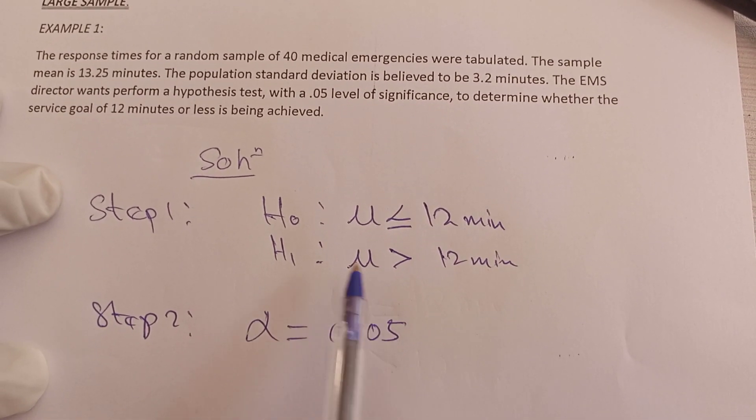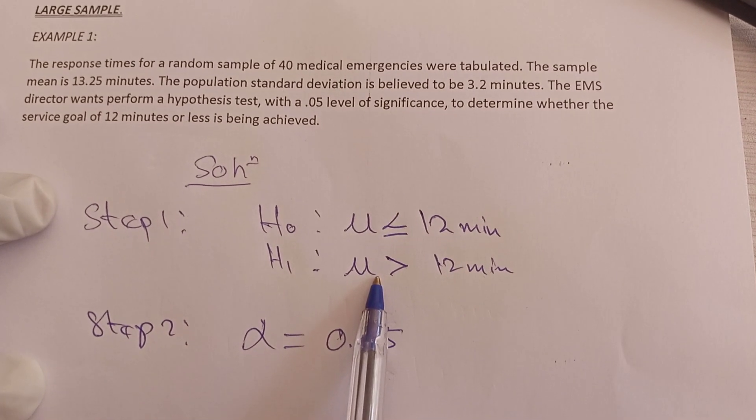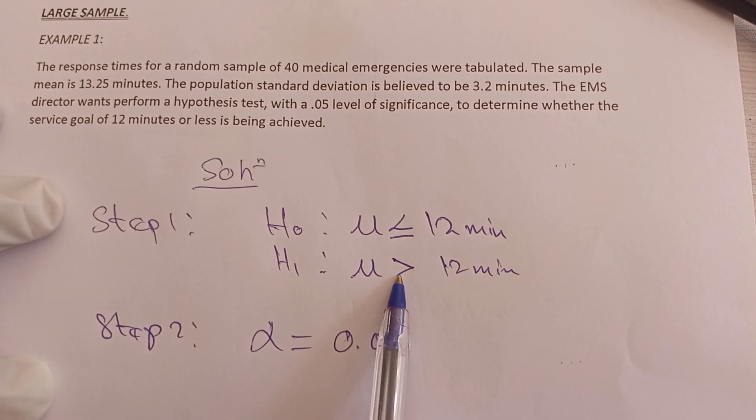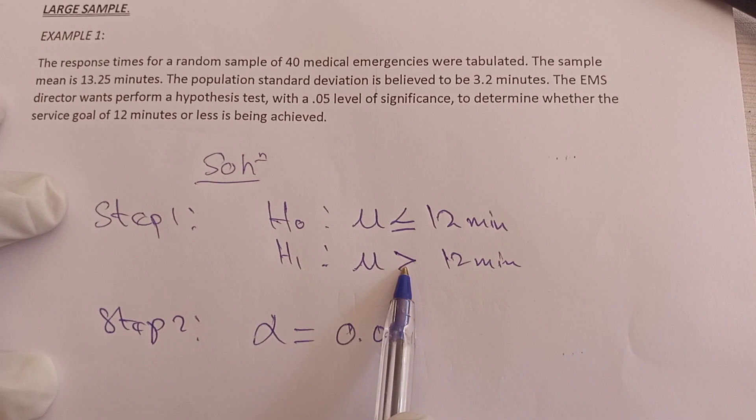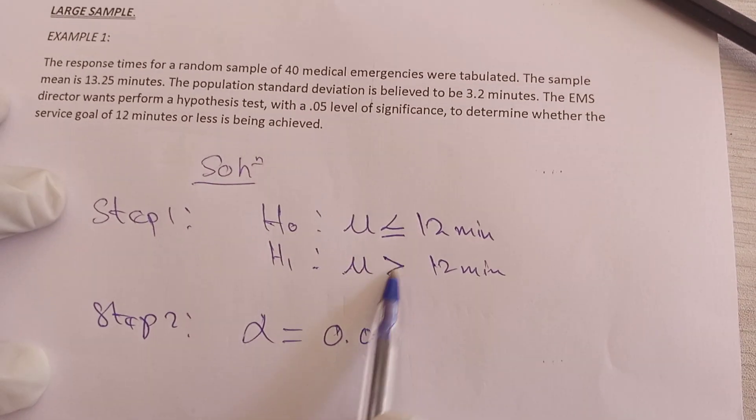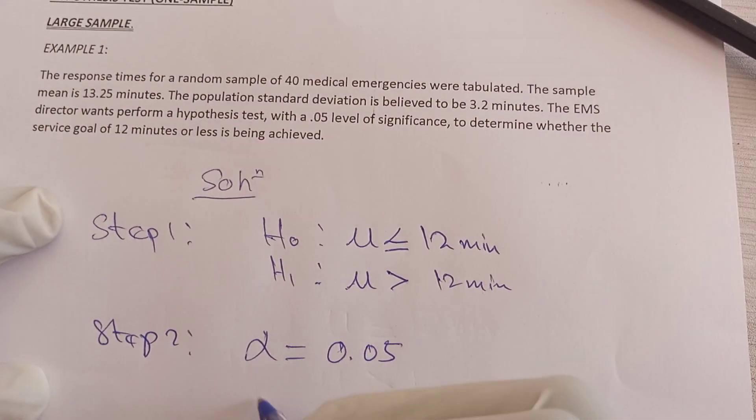Then you tell if this is a right-tail, left-tail, or two-tail test. To check, you need to look at where the sign is. If you have a greater than sign, it is a right-tail test. If you have a less than sign, it's a left-tail test. If you have not equal to, it's a two-tailed test. This is a right-tail test.